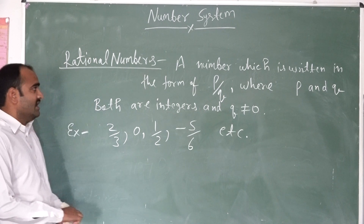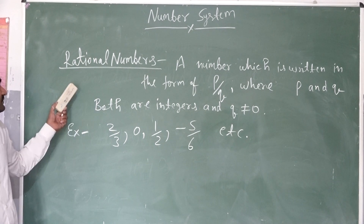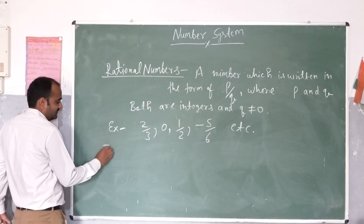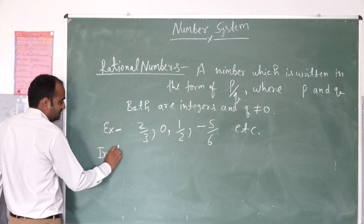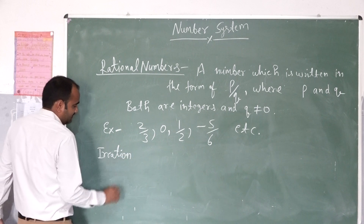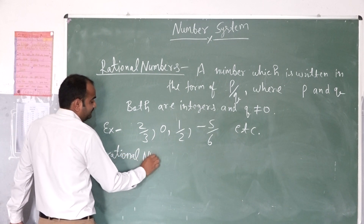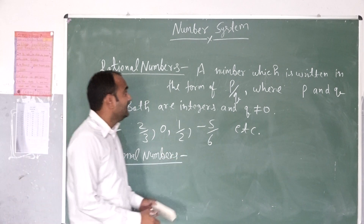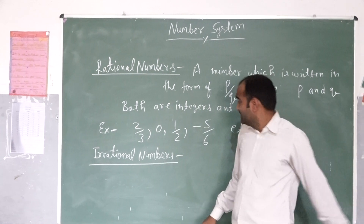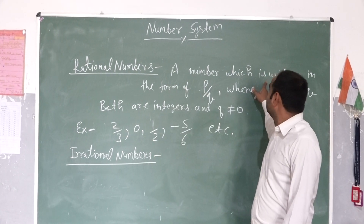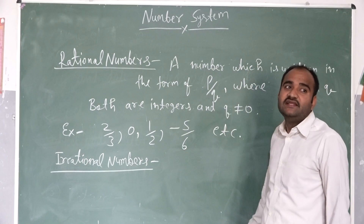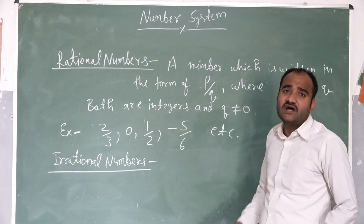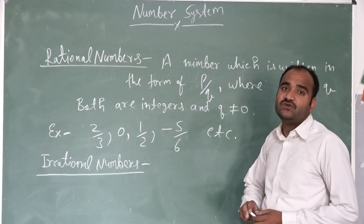Now we discuss irrational numbers. What are irrational numbers? In irrational numbers, a number which cannot be written in the form of P by Q, where P and Q both are integers and Q is not equal to 0.